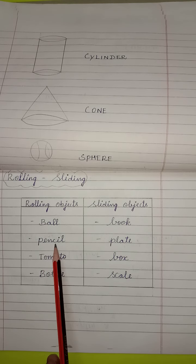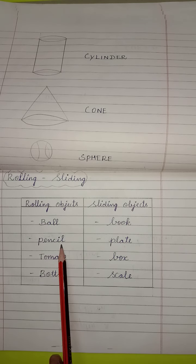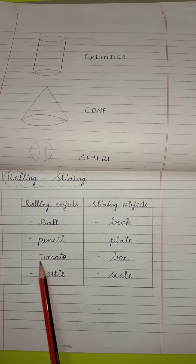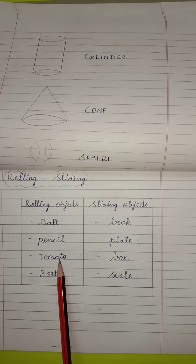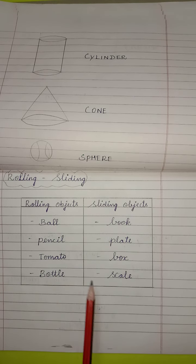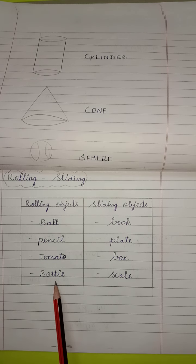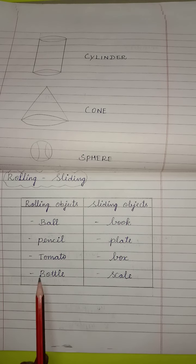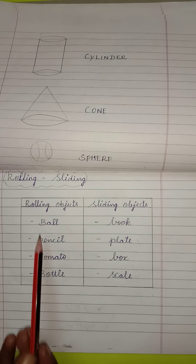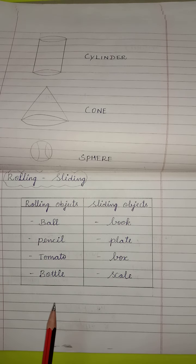P-E-N-C-I-L. Pencil. Tomato. T-O-M-A-T-O. Tomato. Then, bottle. We can say, water bottle. B-O-T-T-L-E. Bottle. These objects are, they can roll.